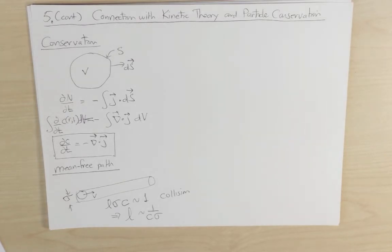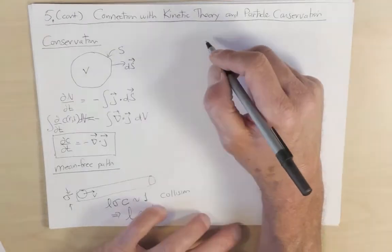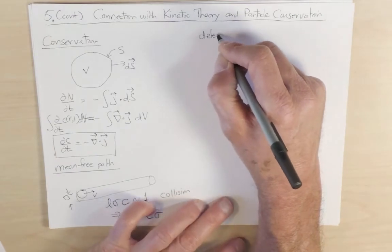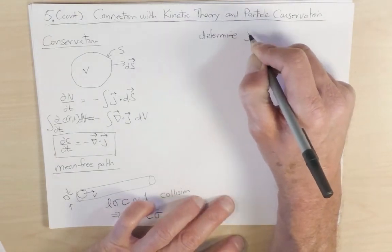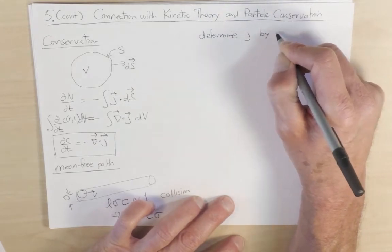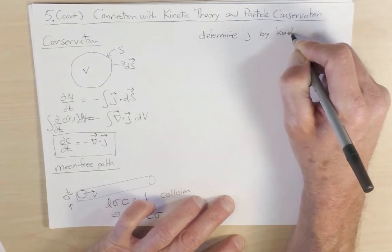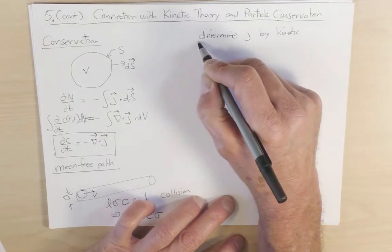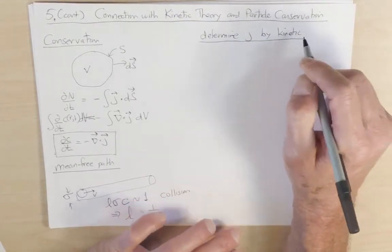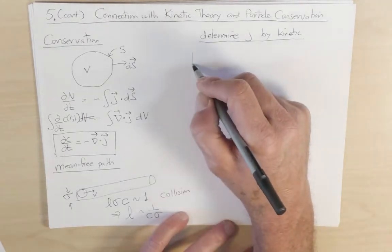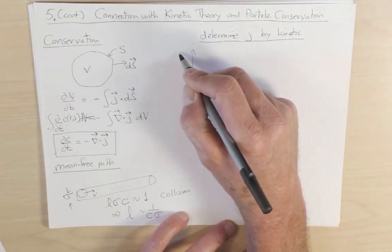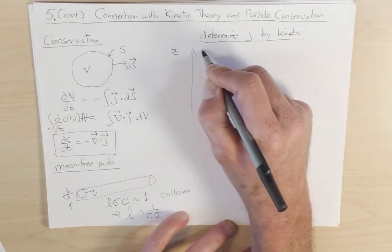Last step now is let's determine the current by kinetic theory. So the picture one should have in mind here is that instead of having a homogeneous gas, let us suppose that there is a slight gradient in the concentration of particles. So let's imagine that as a function of some spatial coordinate z, there is a concentration c that depends on z.